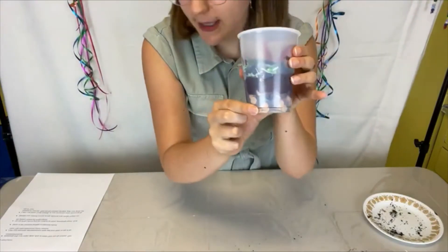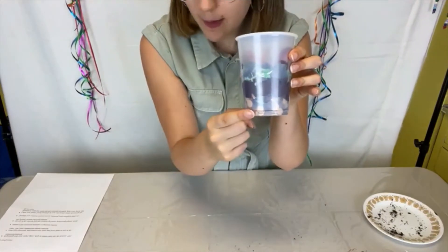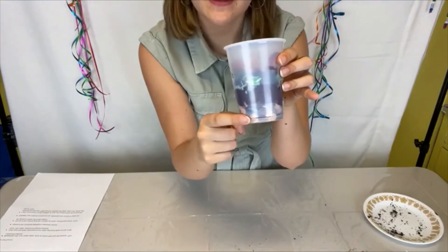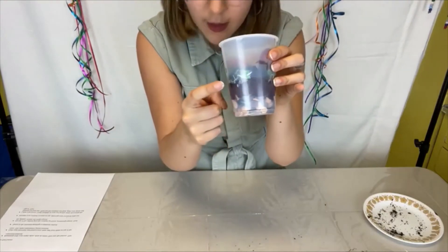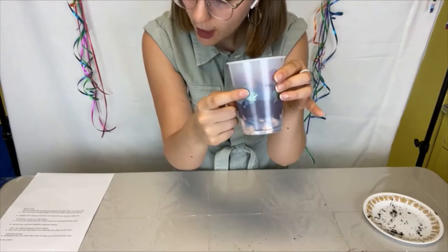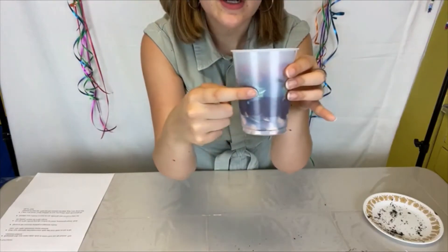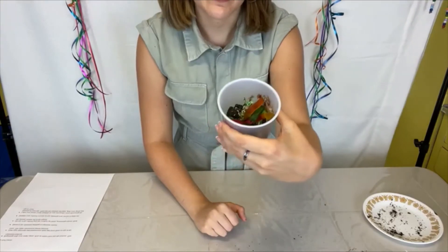So once again, our Oreo at the bottom is bedrock. Our chips are parent material. Our pudding represents subsoil. The crushed up Oreos represent topsoil. And the green coconut represents organic material. And of course, we have our gummy worms at the top.